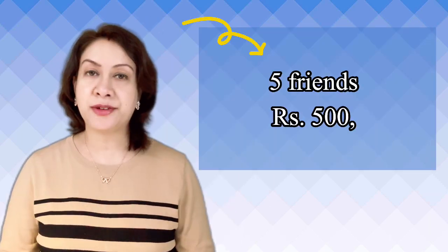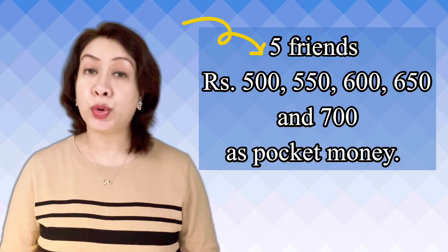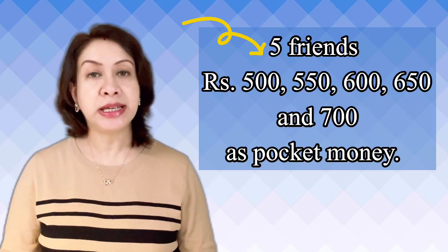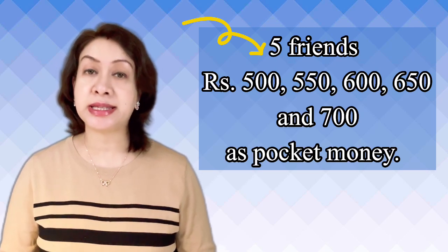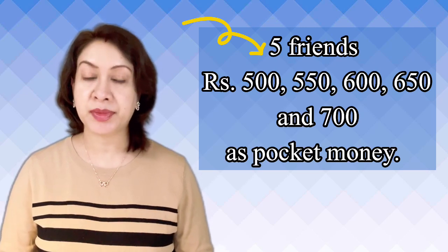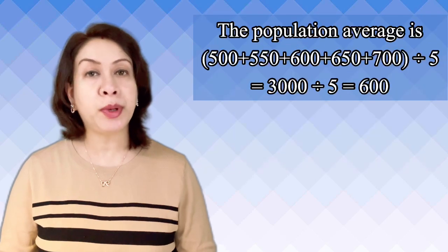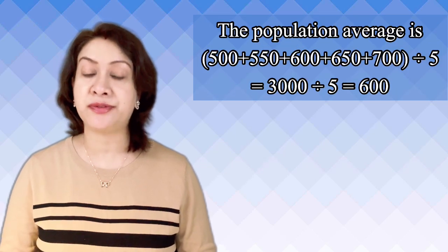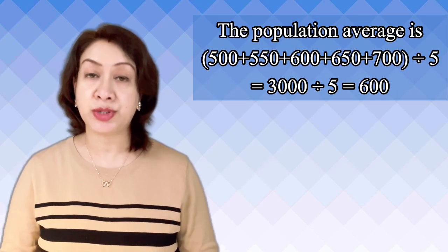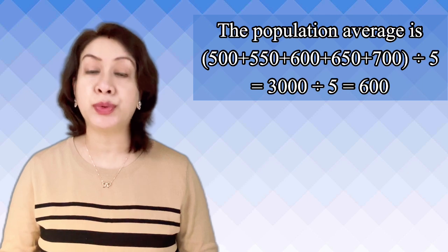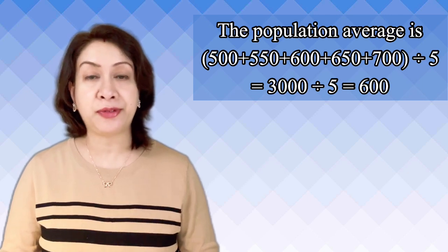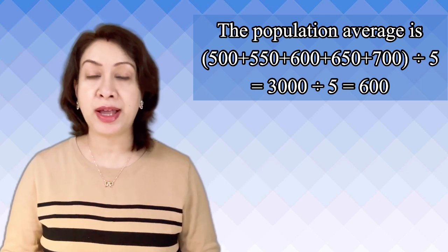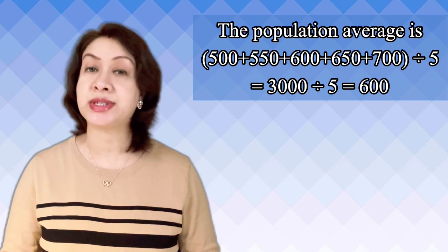Let us consider 5 friends who are receiving rupees 500, 550, 600, 650 and 700 as pocket money. The population average will be the addition of all these observations divided by 5, which equals 3000 divided by 5. So the population average value is equal to 600.